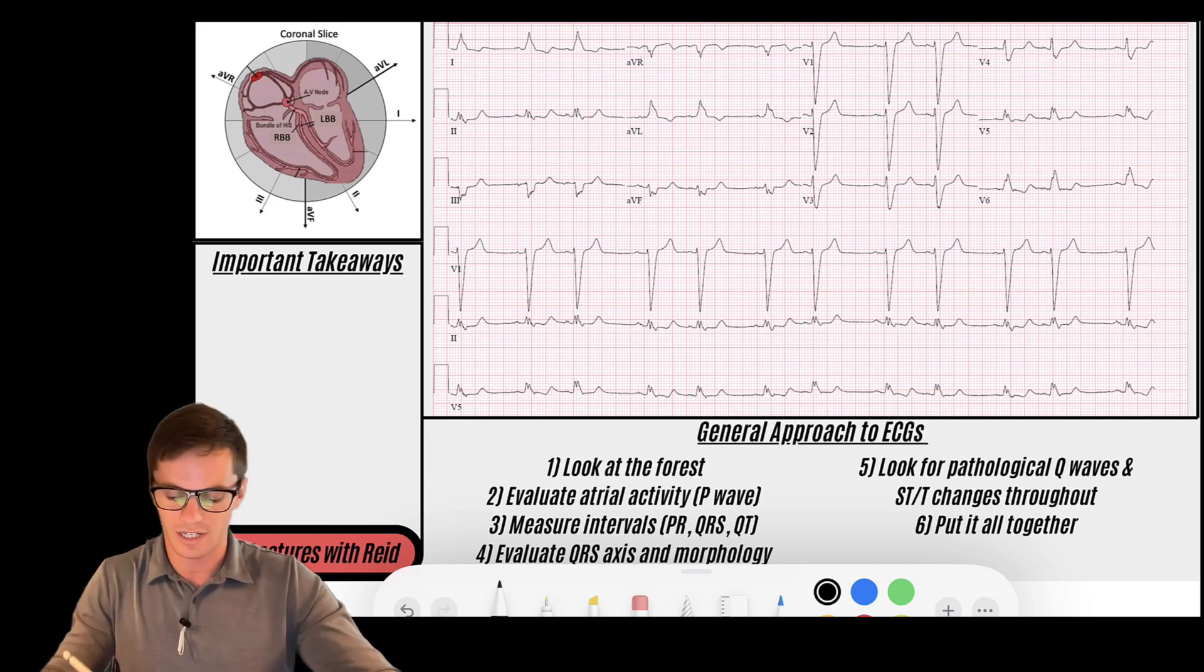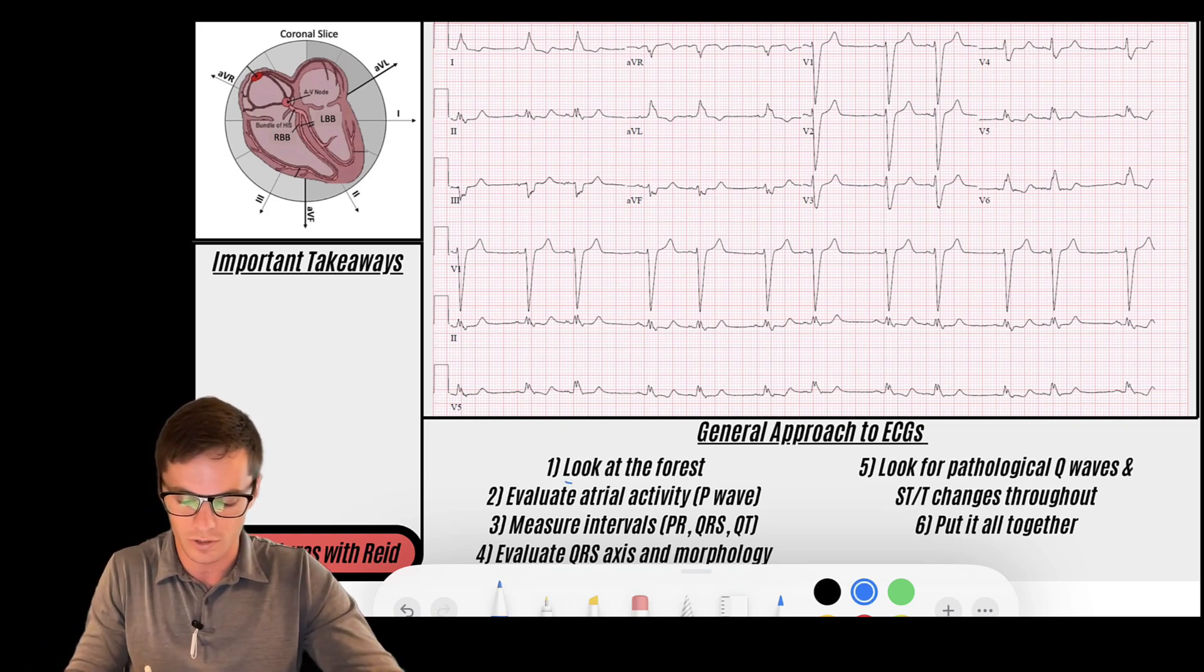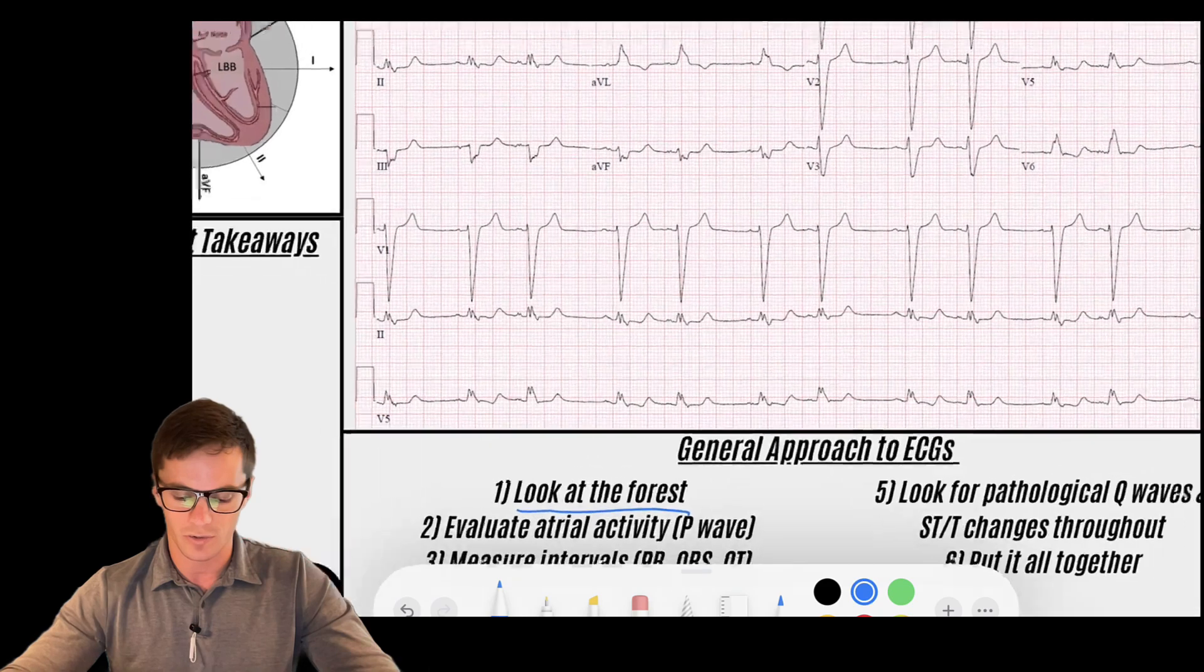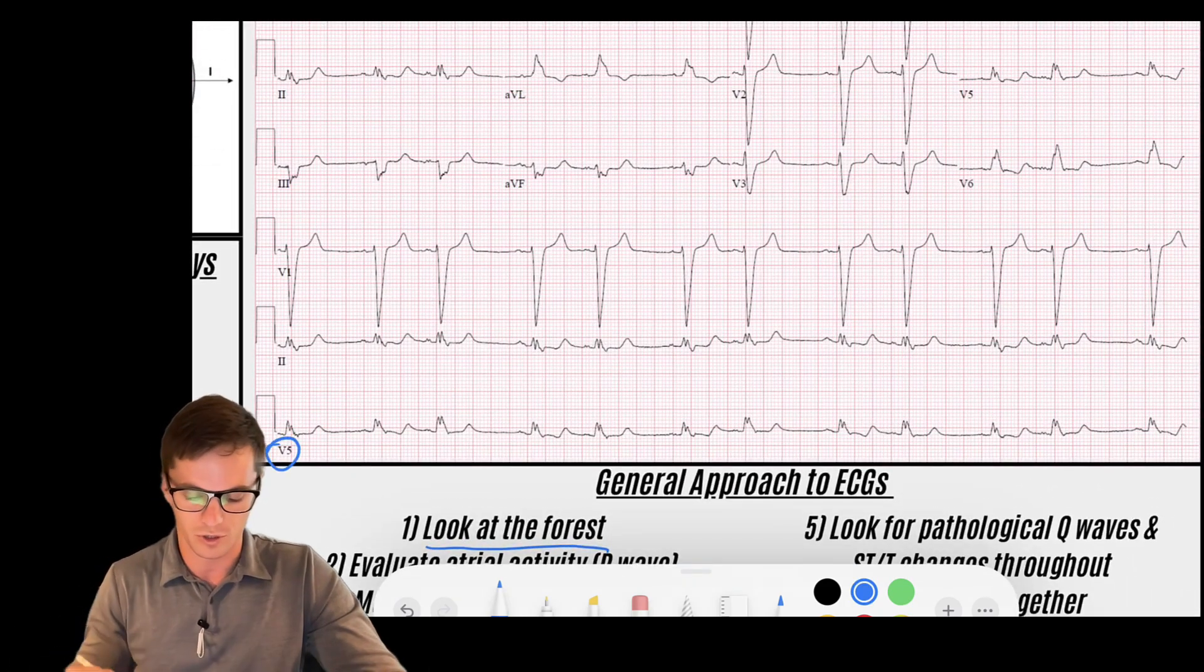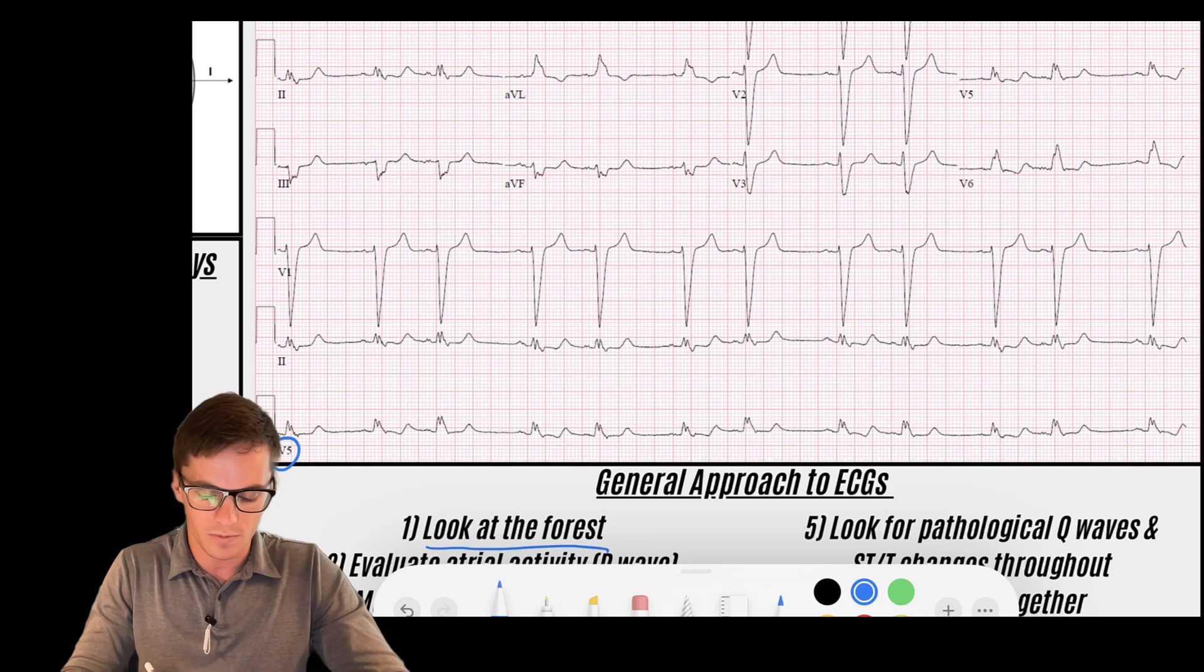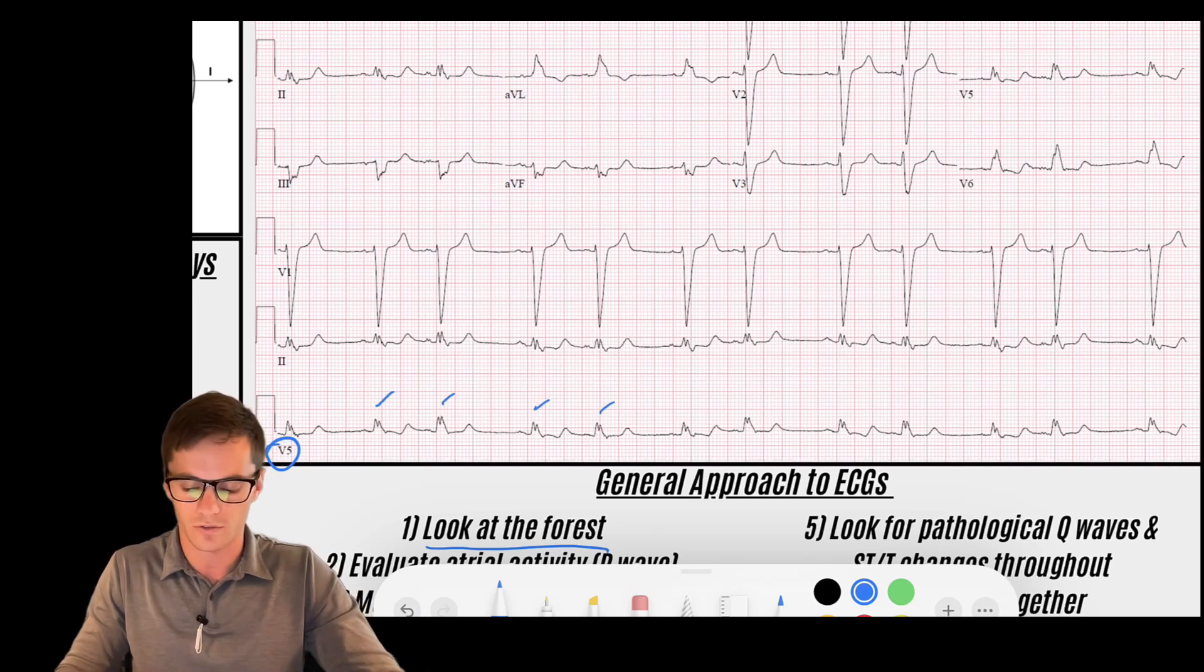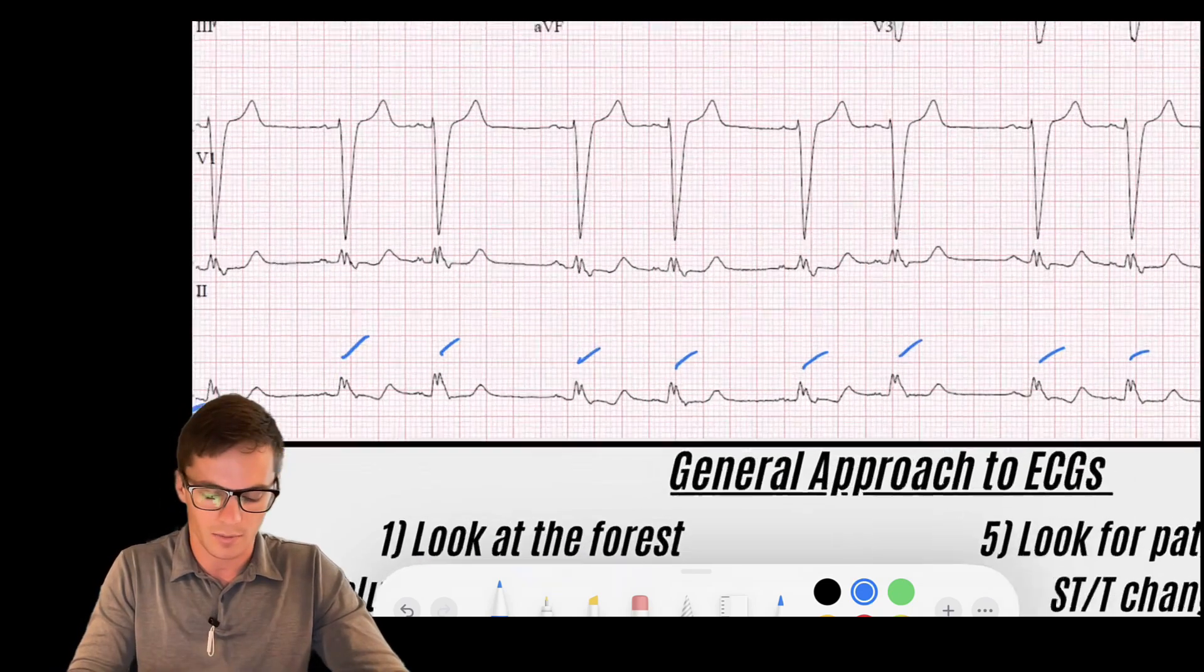Let's jump into this EKG. The first thing we're going to do is look at the forest and get an idea of what we think is going on with this strip. I'm going to zoom in and pick maybe V5 here, this rhythm strip, and I noticed that I've got what appears to be a wide complex rhythm and it occurs in these groups of two. I'm getting group beating, it's a wide complex.